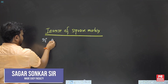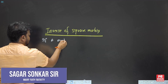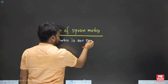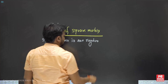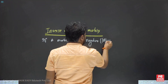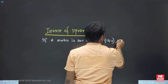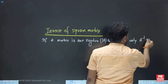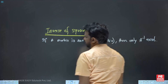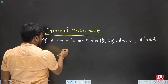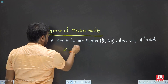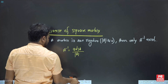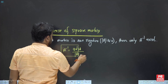If a matrix is non-singular — that is, the determinant of A is not equal to zero — then only A inverse exists. The formula for A inverse is: A inverse equals adjoint of A divided by the determinant of A.